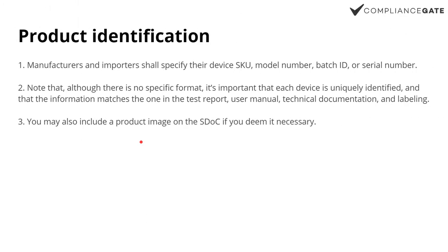The first thing you need is product identification. Something to mention before we move forward is that the principle of the S-DOC is very similar to that of the Declaration of Conformity in the EU, which is mandatory for electronics in the European Union. So you'll feel right at home with this if you've issued DOCs for the EU in the past. Essentially, it's a self-issued document, self-certification, based on support documentation.